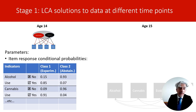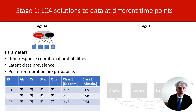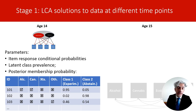By inspecting these probabilities we can interpret the meaning of the latent classes. For example, we see that individuals in latent class one have higher probabilities of reporting alcohol and cannabis use, and those in latent class two have low probabilities of reporting use of these substances. The other parameters provided by latent class analysis are the prevalence of latent classes — how many individuals are likely to be in latent class one and in latent class two.